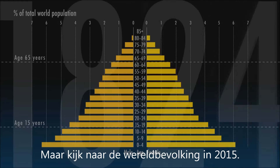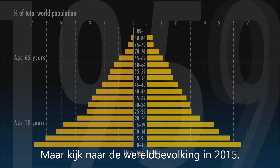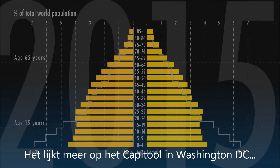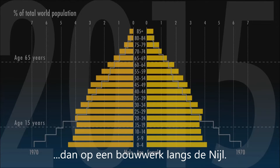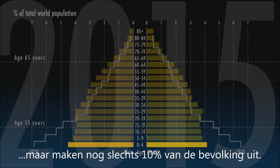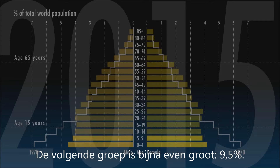But now look at the chart of the global population in 2015. It looks more like the Dome of the Capitol building in Washington, D.C., than something you find along the Nile. Young children are still the largest group, but now make up only 10% of the population, and those above them are almost as big, with 9.5%.